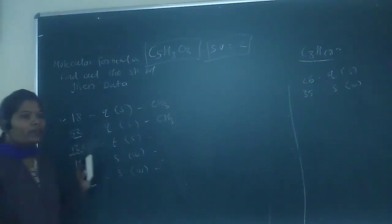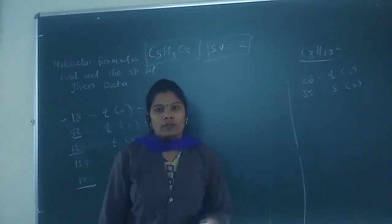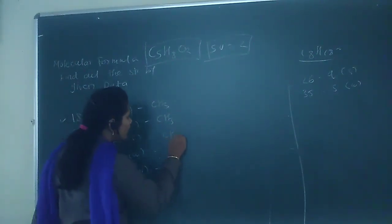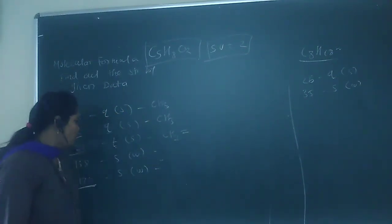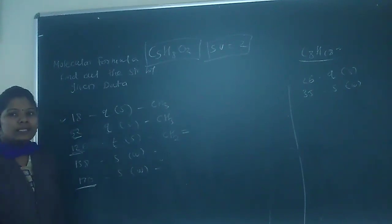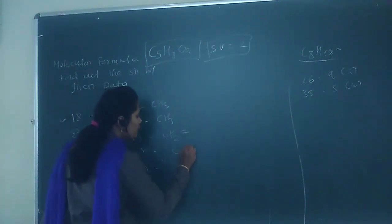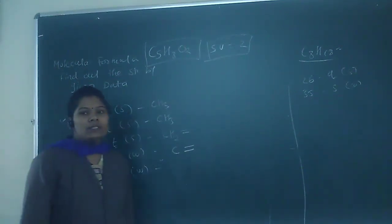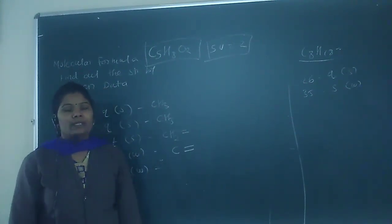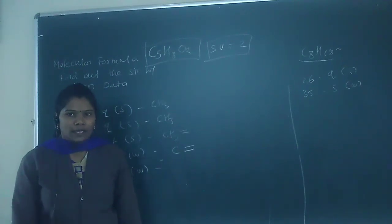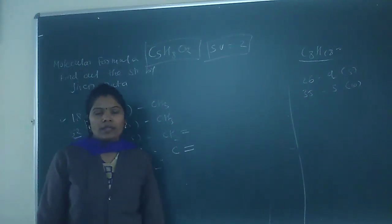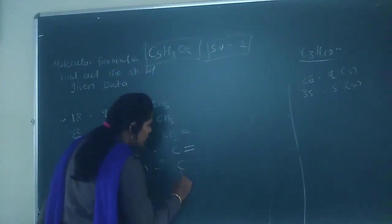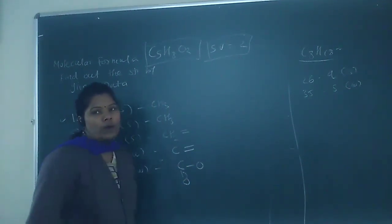Next, 126 is in the range of 120–140, which is the region for carbon-carbon double bonds. This triplet carbon — a CH2 — must be attached to a C=C double bond. The signal at 138 is a singlet, meaning a quaternary C also attached to the carbon-carbon double bond. And 170 is the highest chemical shift value, indicating a carbonyl carbon of an ester.